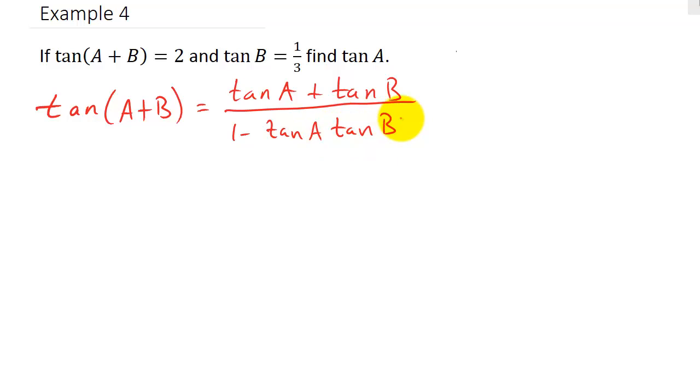Alright, so let's see what all we have. Well, we know tangent A plus B. They tell us that's 2. We know tangent B and tangent B here. Okay, tangent B is 1 third. And we're looking for tangent A. So you can see tangent A is our only unknown. So let's go ahead and plug everything in and see what happens.